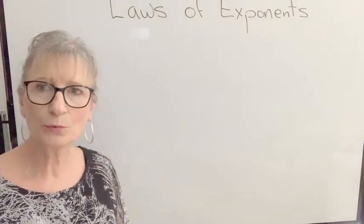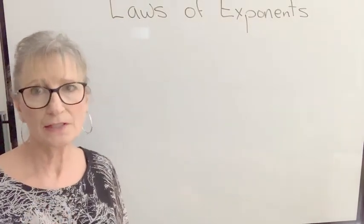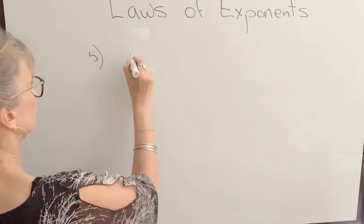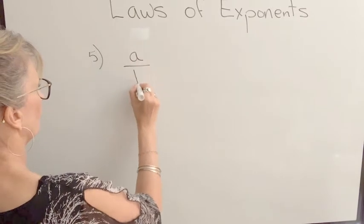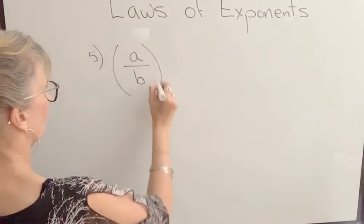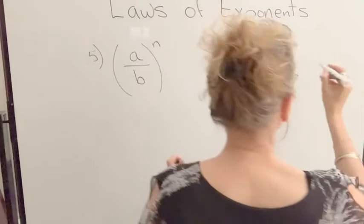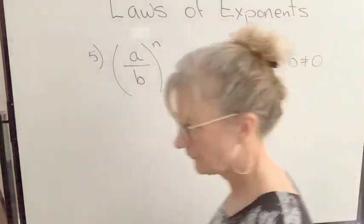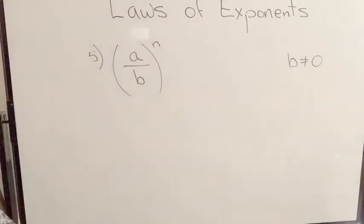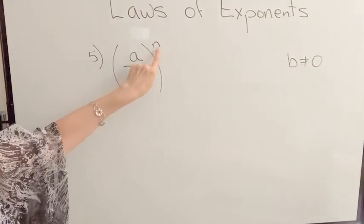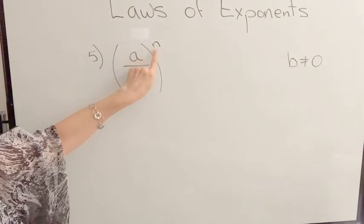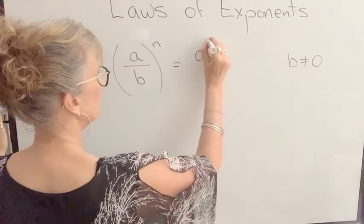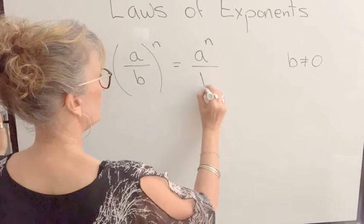We also have a rule for a quotient that has an exponent applied to it. I'll make a note. Our denominator cannot equal zero. And in this case, the rule says that we can apply that exponent to the numerator and to the denominator.